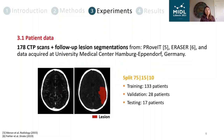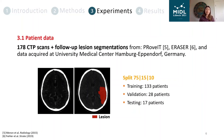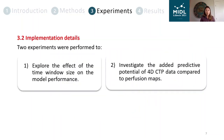A total of 178 CTP scans from multiple centers were used to develop and evaluate the proposed model for stroke outcome prediction, each of which has a registered follow-up scan and a corresponding lesion segmentation available. Using this data, we performed two experiments: one to explore the effect of the time window size on model performance, and two to investigate the added predictive potential of raw 4D-CTP data compared to perfusion maps.